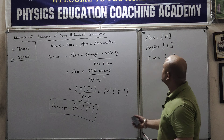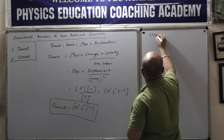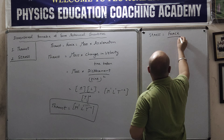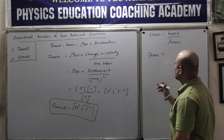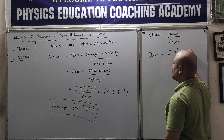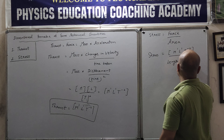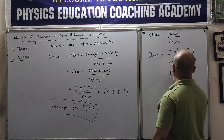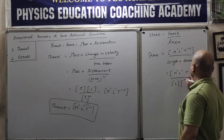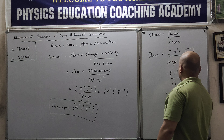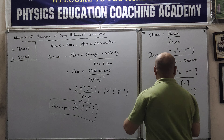Now we will find the second quantity, that is stress. Let us find the dimensional formula of stress. Remember, you must know the formula. Stress equals force over area. The dimension of force we just derived is M¹L¹T⁻². Now, what is area? Area is length into breadth, so M¹L¹T⁻² divided by L times L.